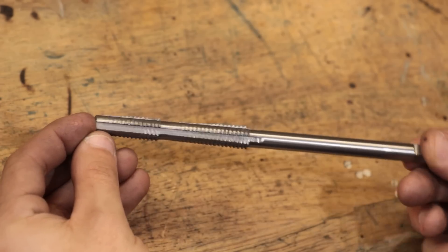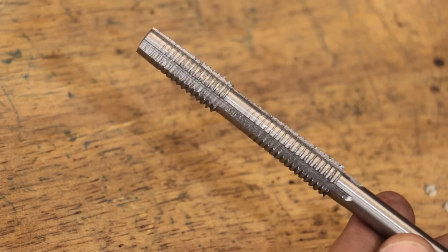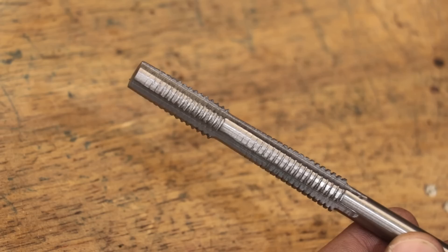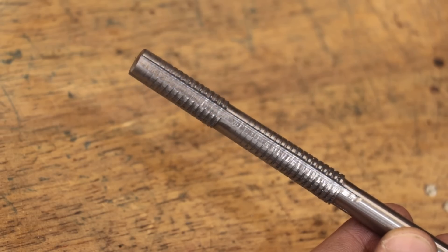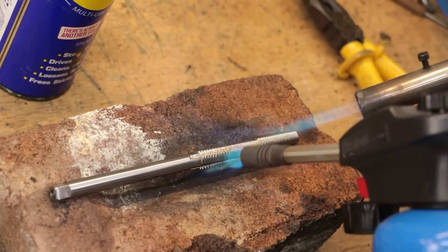All right, and that's the tap now done. Certainly one of the more stranger looking pieces that I've made, but the important thing is that it does work. So what I'll do is I'll quickly harden and then temper it and then go from there. And I'm only going to harden the cutting part of the tap. No reason to harden the shank.